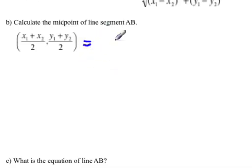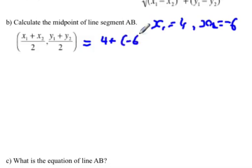So if we're going to sub in, remember that x1 was 4 and x2 was negative 6. And so when we sub in, it's going to be 4 plus negative 6 over 2.